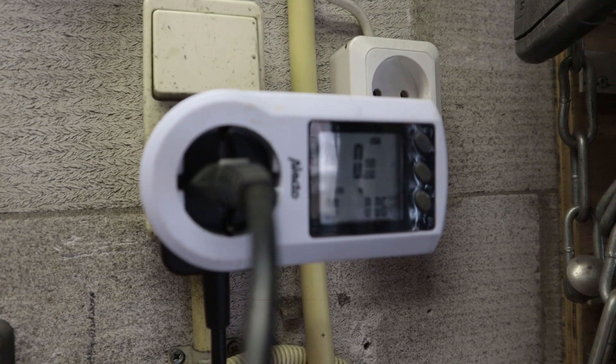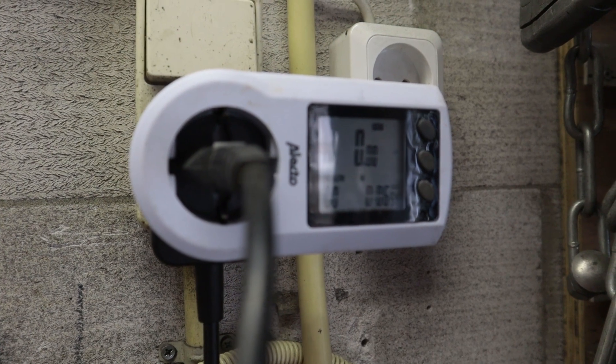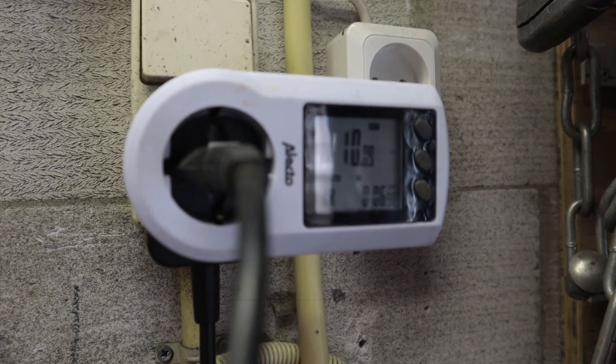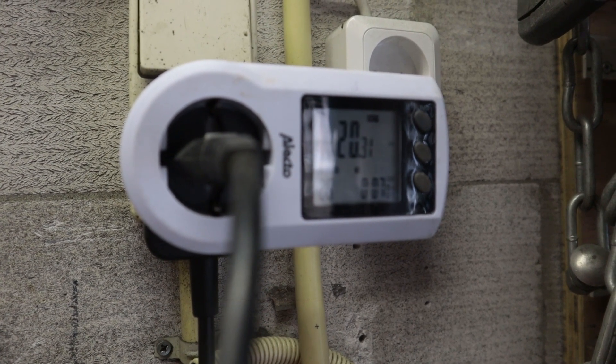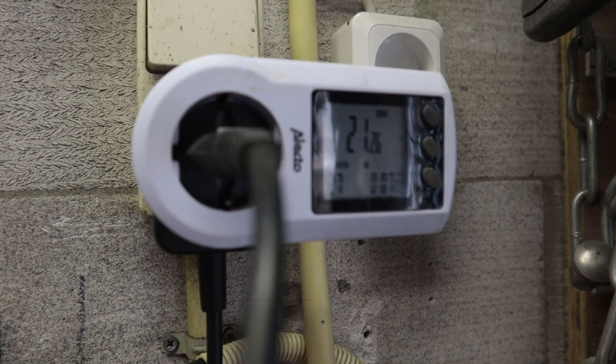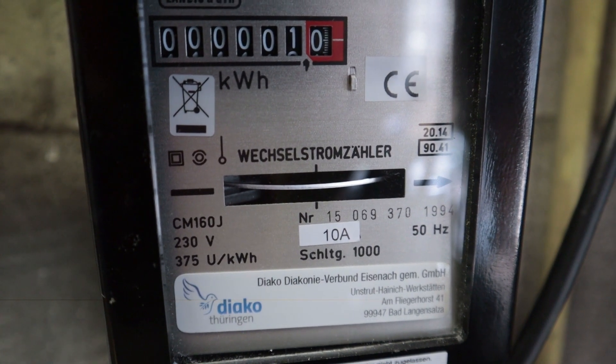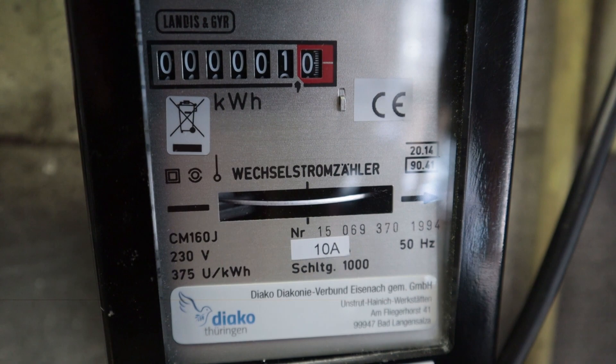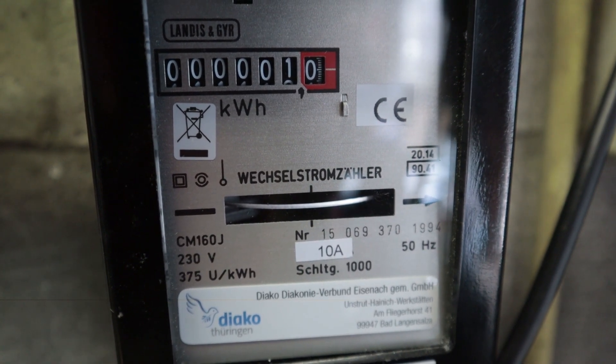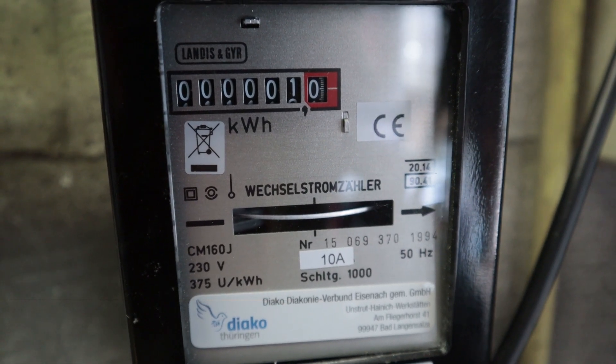And now I'm going to continue to turn the potentiometer, and you can see the number goes back up. So right now we're at about 20, 21, and if you look over here on this meter, you can see, if you look very carefully, the disc is now spinning in the opposite direction. So we're actually feeding power into the grid. So we are now officially a power station.